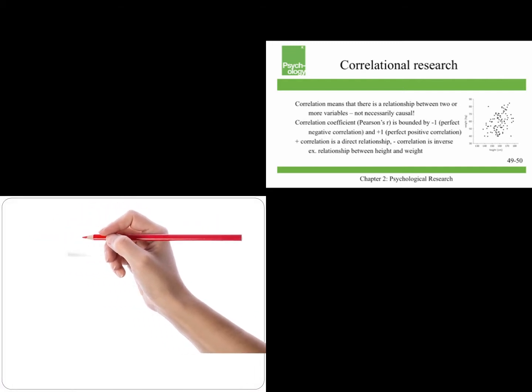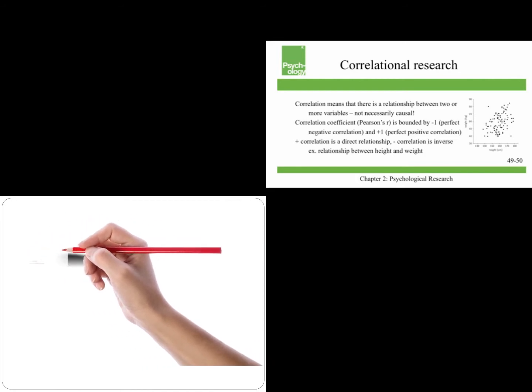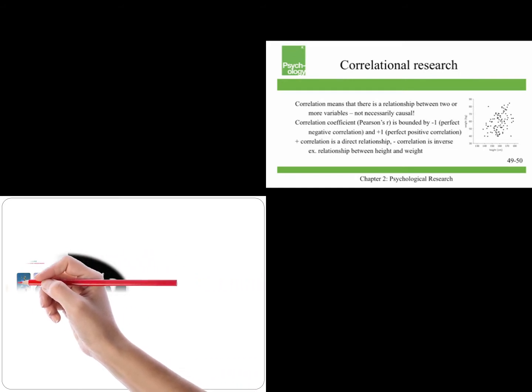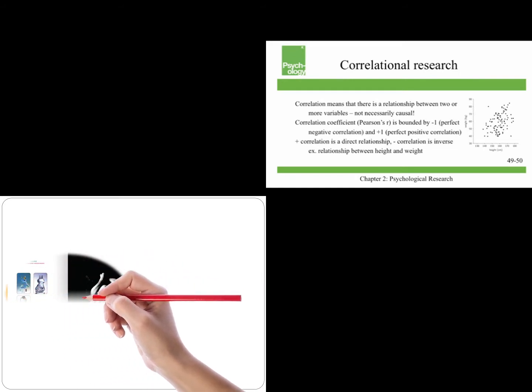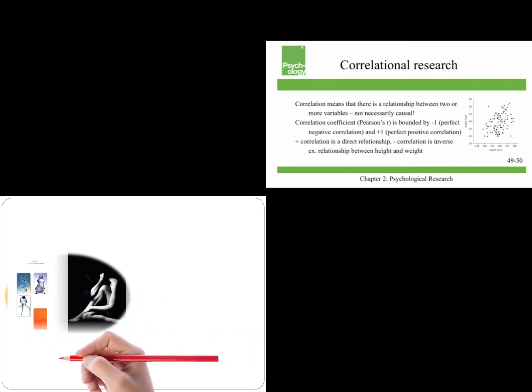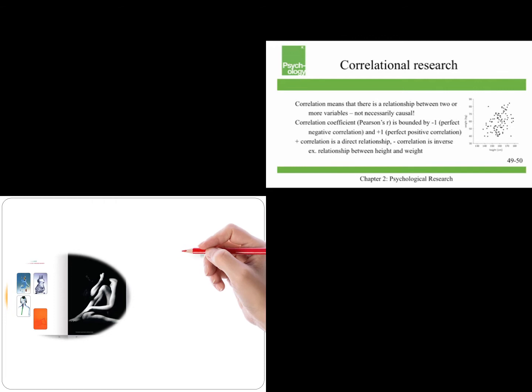So a positive correlation is a direct relationship, and a negative correlation is an inverse relationship. An example would be the relationship between height and weight, which is in the figure to the right. That's a positive or direct relationship because in general, taller people weigh more. So I'm 6'2 and I weigh 180, which is probably more than someone who's 5'2.